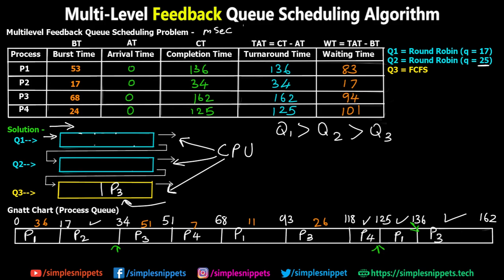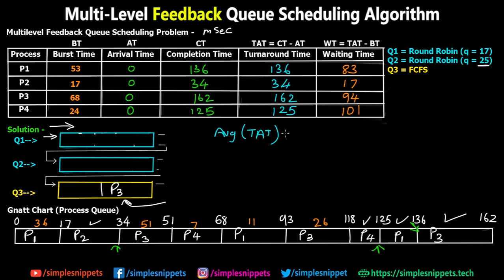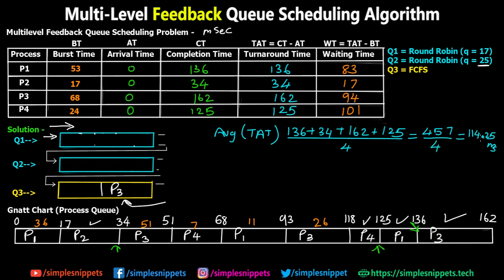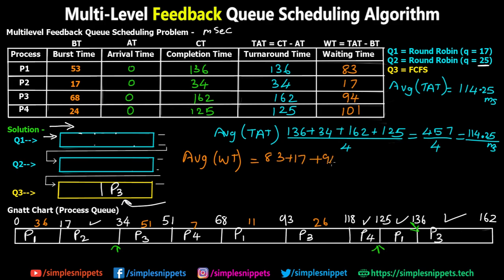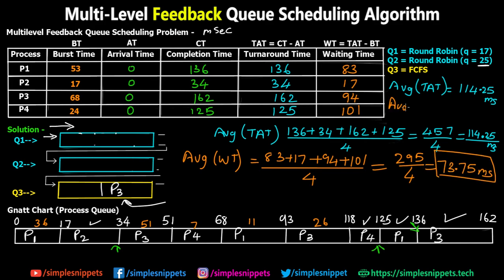Now we can calculate the averages. Average turnaround time = (136+34+162+125)/4 = 457/4 = 114.25 milliseconds. Average waiting time = (83+17+94+101)/4 = 295/4 = 73.75 milliseconds. So the average waiting time of the entire system is 73.75 milliseconds. These were the final answers and all the values needed in a typical scheduling problem.